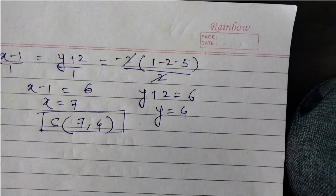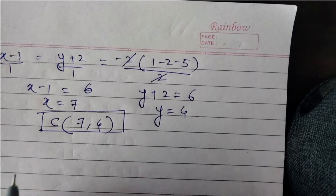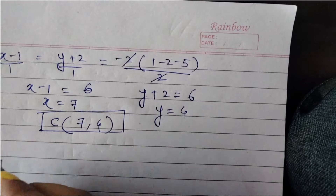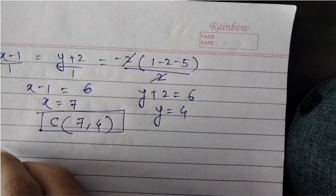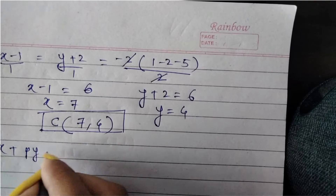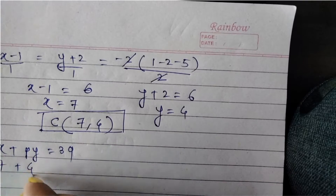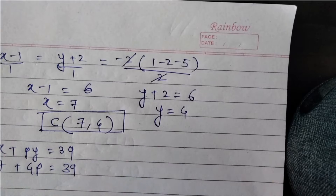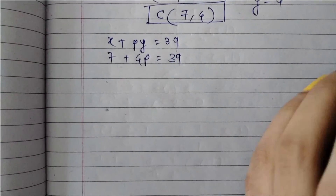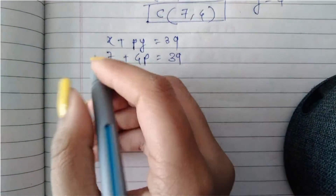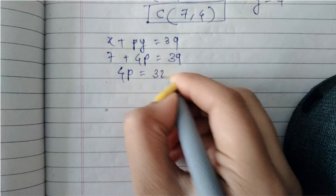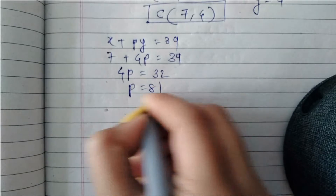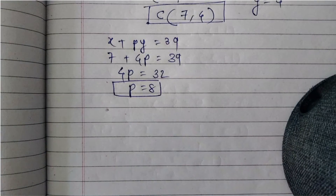Now we need to find p, the unknown in the equation of BC: x plus py equals 39. Since C(7, 4) lies on this line, substituting gives 7 plus 4p equals 39, so 4p equals 32, and therefore p equals 8.